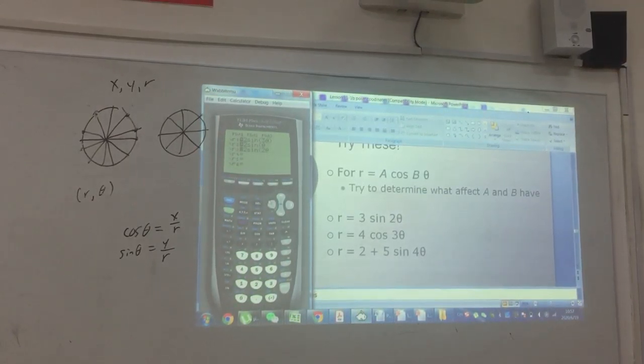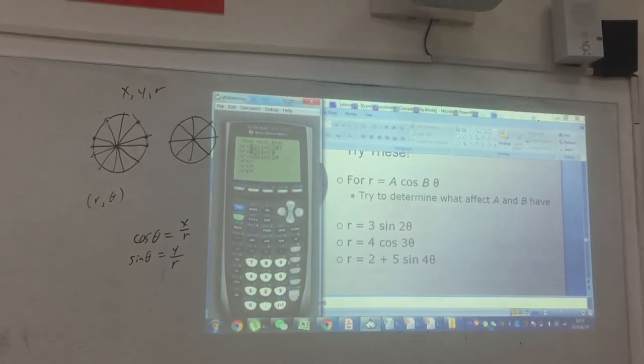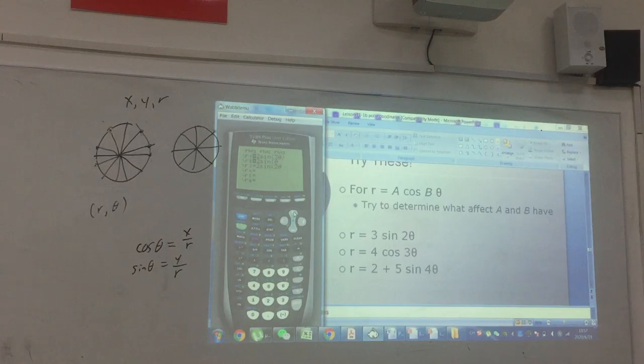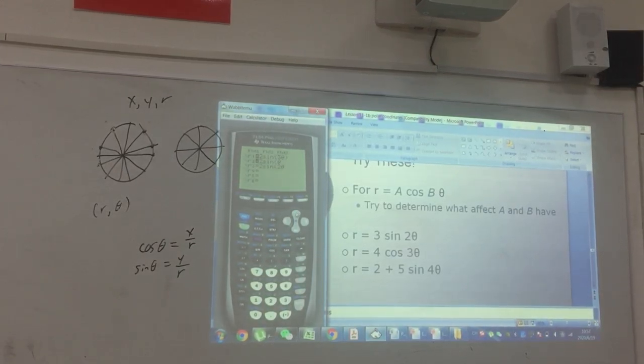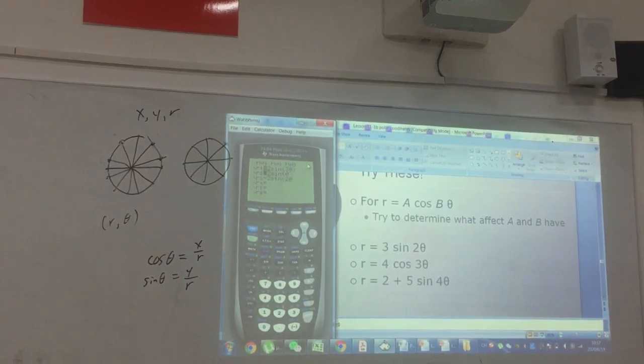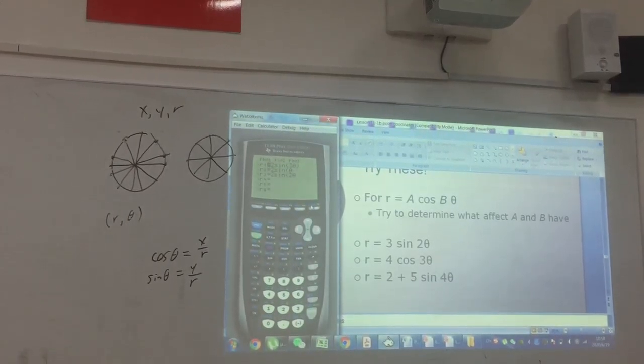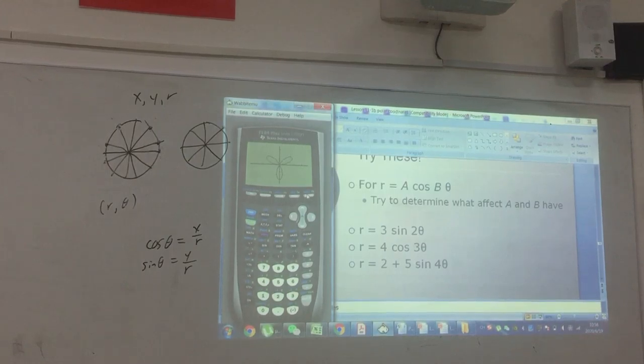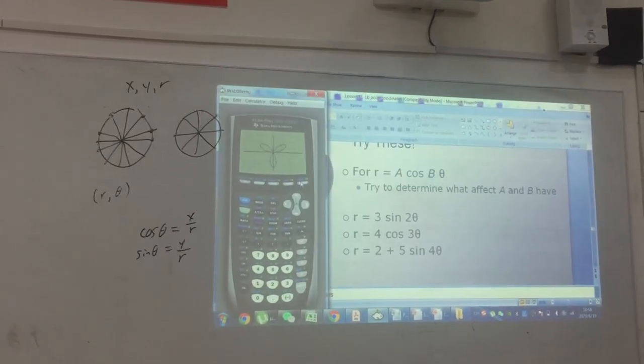You see the equal sign? Does everybody see that? Notice if I hit the enter, I can deselect it. I can also reselect it again. So, I'm going to deselect these two, so that way we're only looking at two sine of three theta. And there you go.